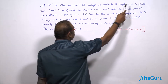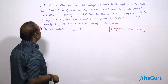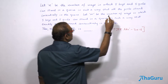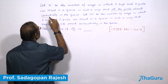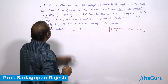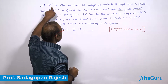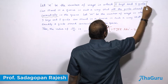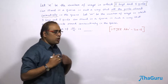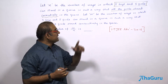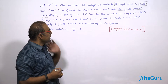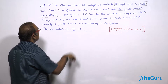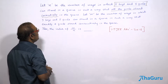Let N be the number of ways in which 5 boys and 5 girls can stand in a queue such that all the girls stand consecutively in the queue. So all 10 people are standing in a queue, but the 5 girls are standing consecutively and the boys are present in other positions. That total number of such permutations is N.